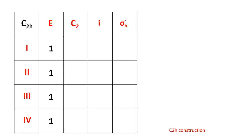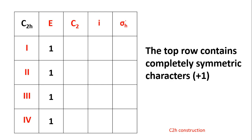Let's look at the topmost row. It represents a completely symmetric representation — all the characters are completely symmetric. When we say completely symmetric, all of them should carry positive values. So the characters in the topmost row are all positive values of 1.